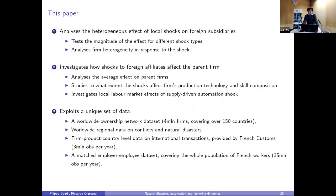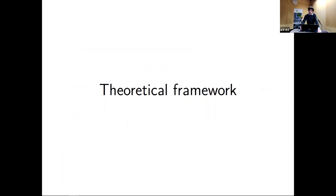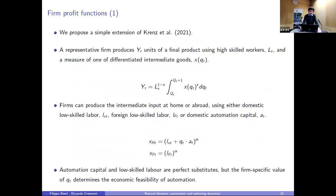To do so, we exploit a unique set of data. First, a worldwide ownership network dataset comprising more than 4 million firms covering over 150 countries. Then worldwide regional data on conflicts and natural disasters. Firm-product-country level data on international transactions provided by French customs. And finally, a matched employer-employee dataset covering the whole population of French workers — on average 35 million observations per year.